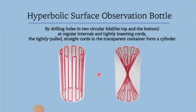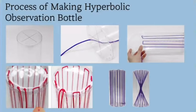So, a hyperbolic observation bottle is a teaching aid. It allows you to observe a line inside the transparent bottle forming a circular cylinder when you drill holes at regular intervals into two circular lids and pass through an elastic string as shown in the picture on the screen. The following is a brief photograph of the production process of the hyperbolic observation bottle. We'll end this video with a clip of us making a hyperbolic observation bottle.